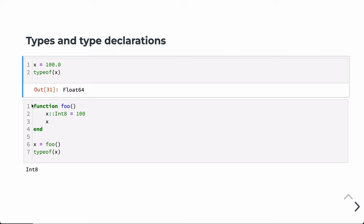We can specify types at variable declaration if we choose to, but only within the scope of a function, because in Julia, it's functions that are compiled. So at compilation time, a variable would be forced to be, say, an 8-bit integer. If a function assigns an Int8 value of 100 to variable X and returns X, then after running the function the first time, we can verify the type of X is in fact Int8.